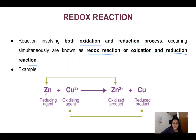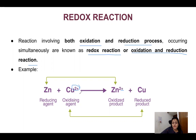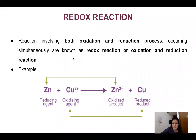So when oxidation and reduction occur simultaneously on each side of a reaction, they are called redox reactions — or oxidation-reduction reactions. For example: Zn becomes Zn²⁺ — that is oxidation, with loss of electrons. And Cu²⁺ gains electrons to become Cu — that is reduction. When these two half-reactions come together, it is a redox reaction.